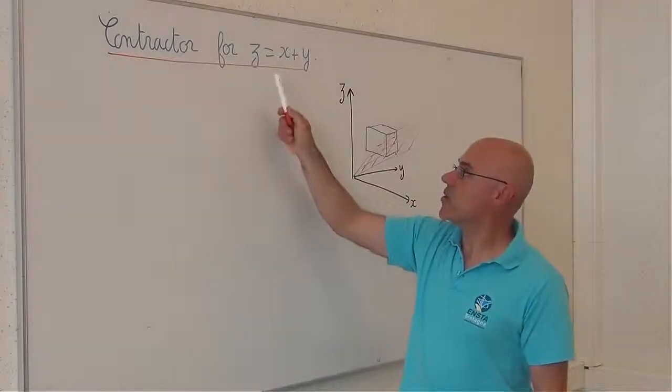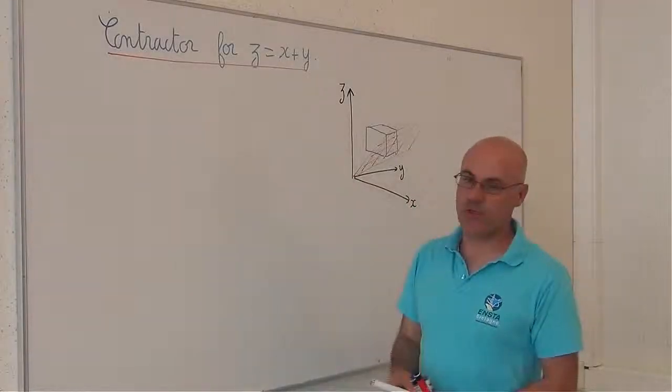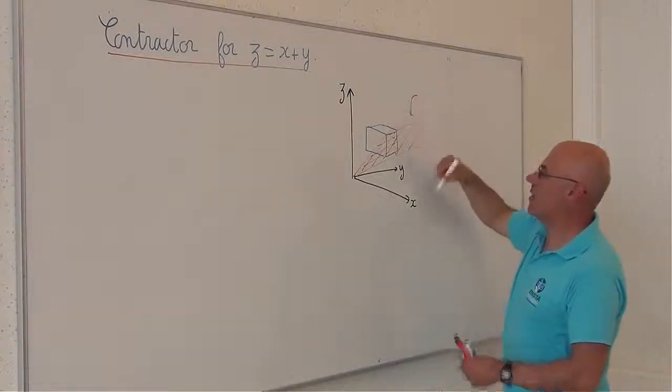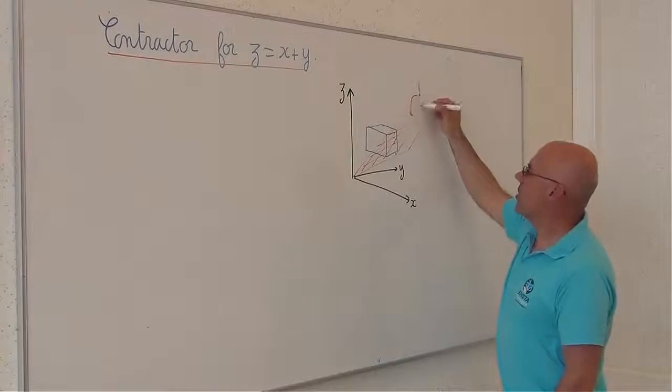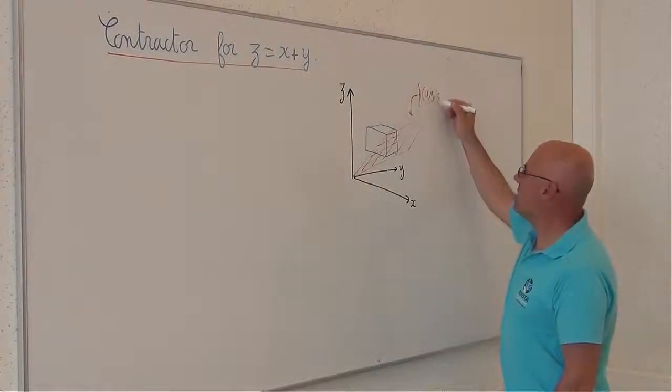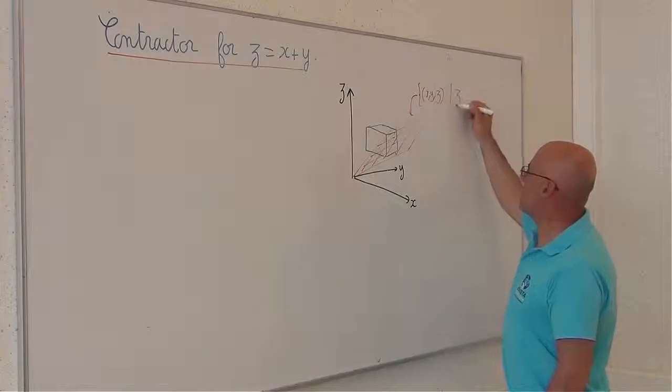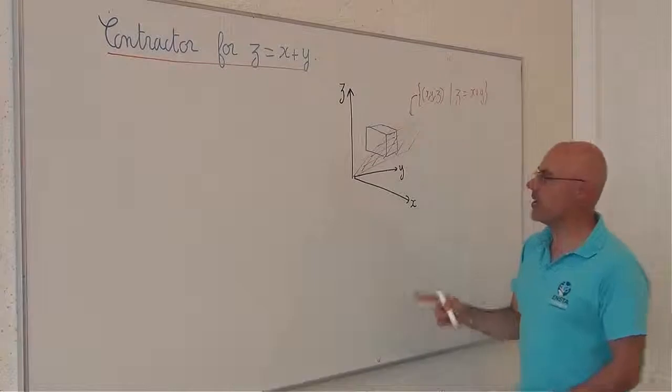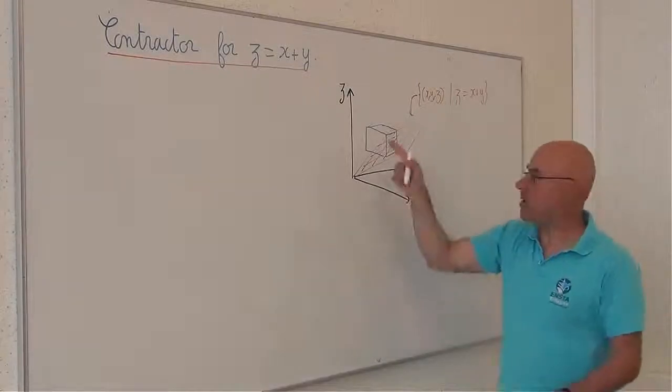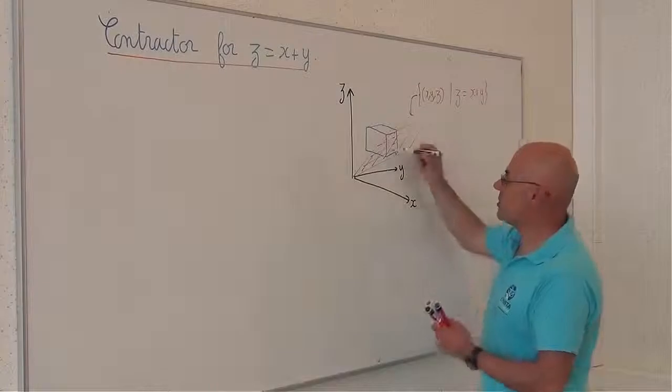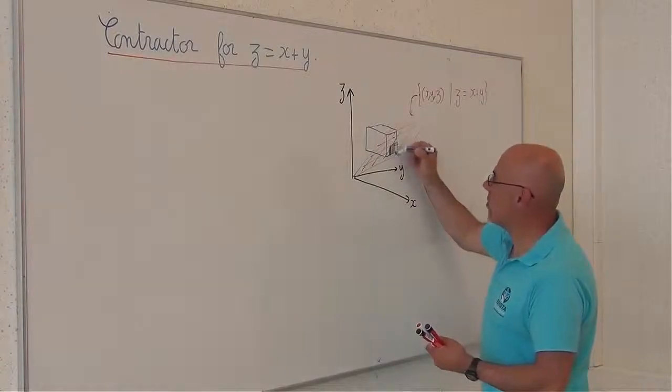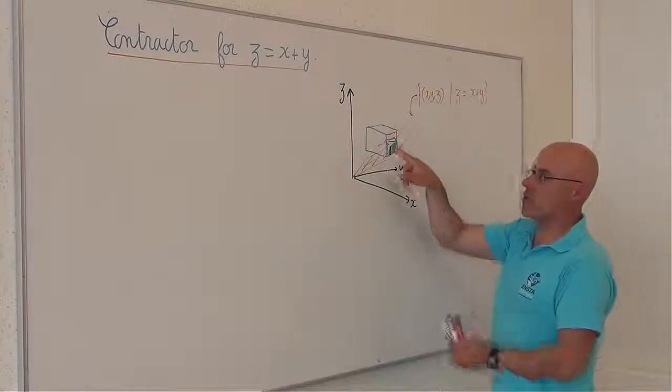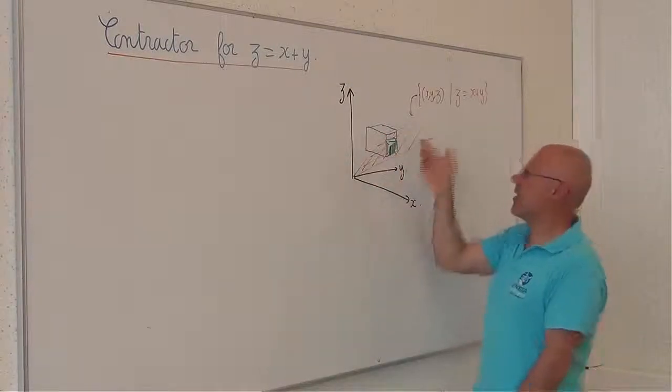If I take the equation z equals x plus y, recall that it corresponds to a set painted here red, the set of all x, y, and z such as z equal to x plus y. This set corresponds to a plane and we have built the optimal contractor which corresponds to take the smallest box which contains the intersection between the blue box and this set.